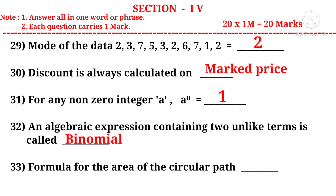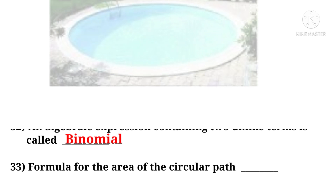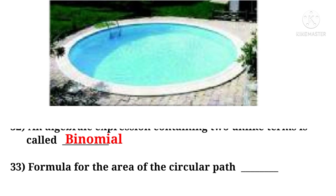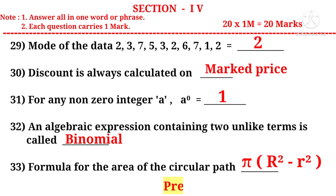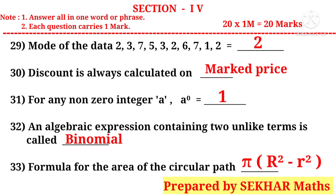Question 33: Formula for the area of a circular path — the circular path is the outer circle minus the inner circle, that is pi into (big R² minus small r²). This is only a model paper prepared by Shaker Maths. Please practice some more problems and get good marks in the forthcoming SA2 examinations. Best of luck.